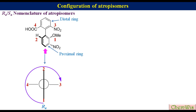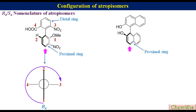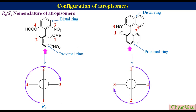Similarly, we can find the configuration of other biaryl systems like BINOL (binaphthol). If you view this molecule from the bottom end, this will be the proximal ring and this will be the distal ring. In the proximal ring, OH will be 1 and the ring residue will be 2; in the distal ring, OH will be 3 and the ring residue will be 4. Its Newman projection will be as shown. The direction of the arrow from 1 to 2 to 3 will be clockwise, so the configuration will be Ra.